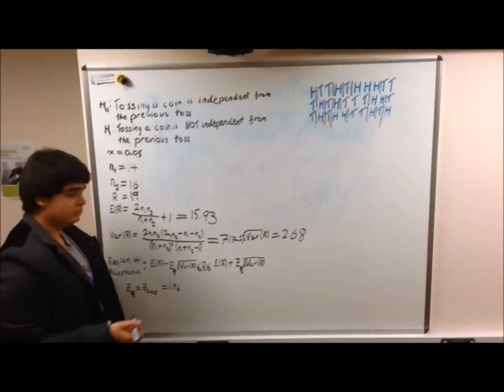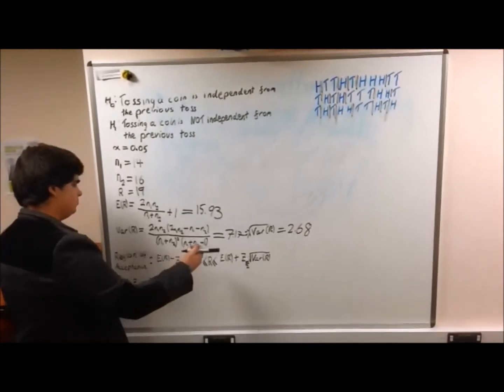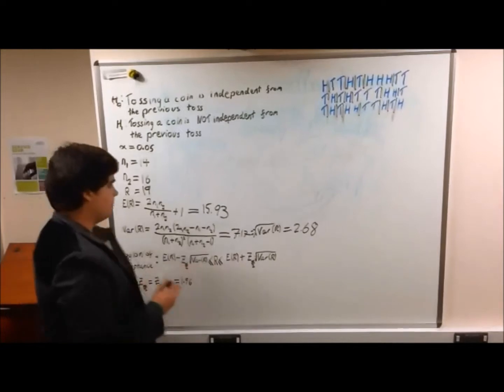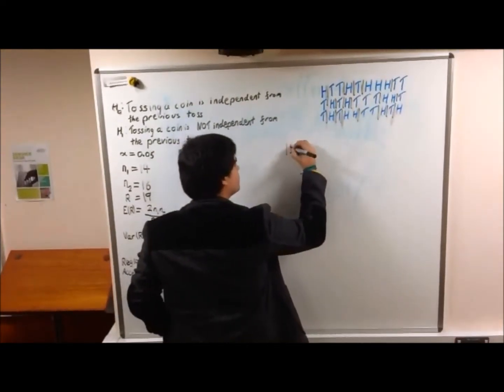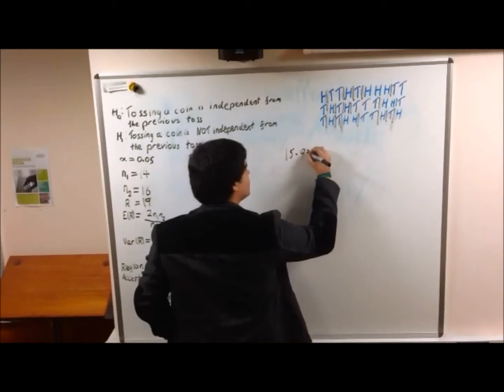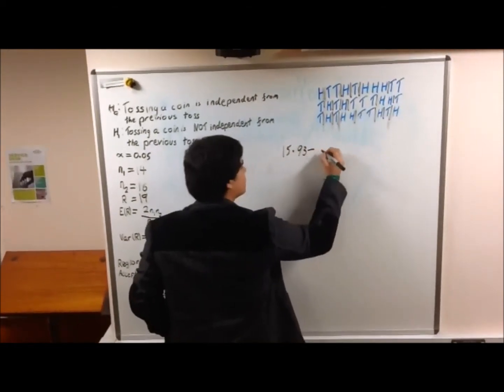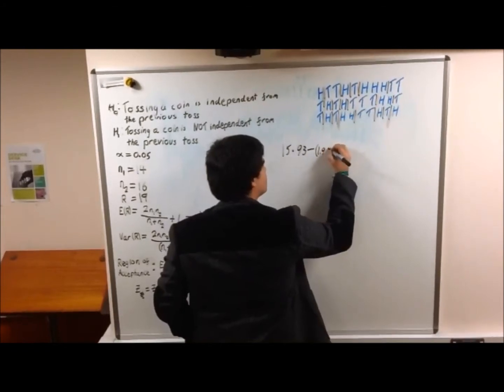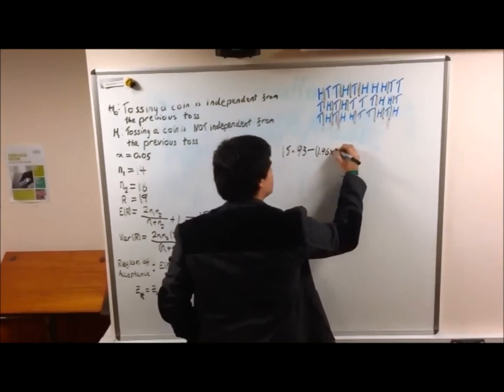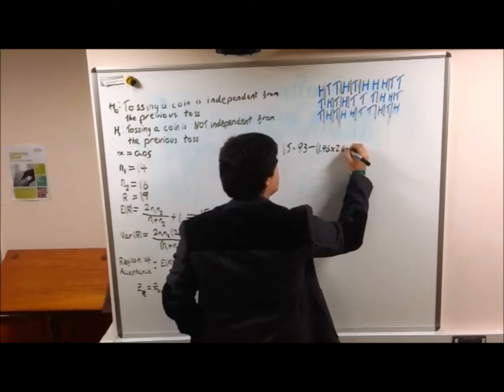Next, we actually have to sub in our values to the region of acceptance. This gives us 15.93 minus open brackets 1.96 times 2.68 close brackets.